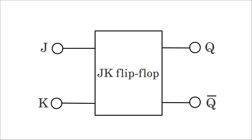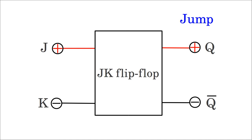The JK flip-flop is similar to the SR latch treated before. If the J input is high while the K input is low, output Q jumps to high level. If the J input is low while the K input is high, output Q is killed. There is no change in output while both inputs are low. If both inputs are brought high, the output toggles, hence it changes to the logical complement of the current state.